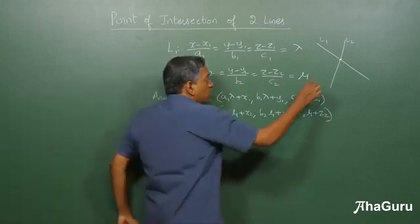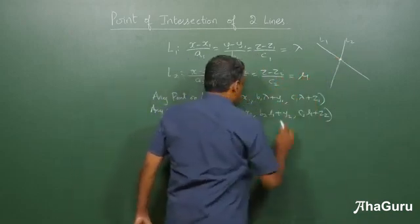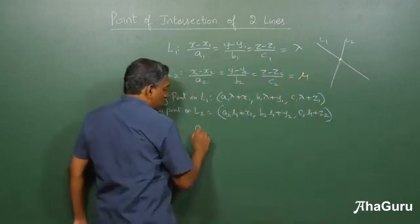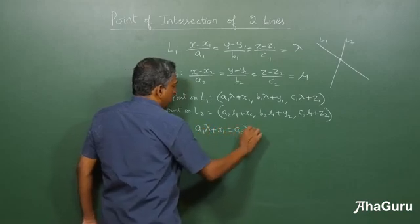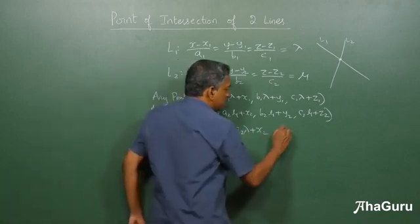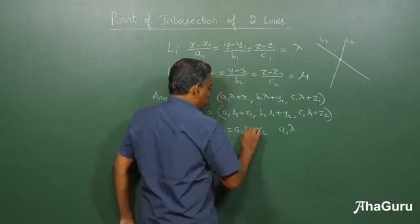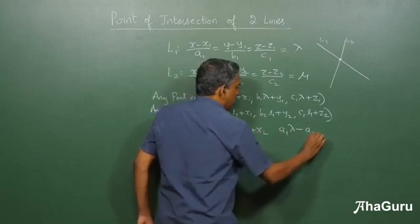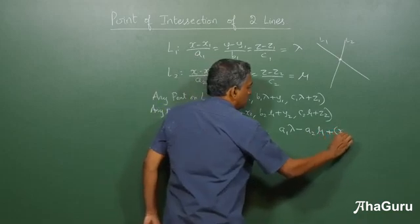Now for the lines to intersect, the point must be common to both lines. That means you must have a1 lambda plus x1 equals a2 mu plus x2, which you can write as a1 lambda minus a2 mu plus x1 minus x2 is 0.